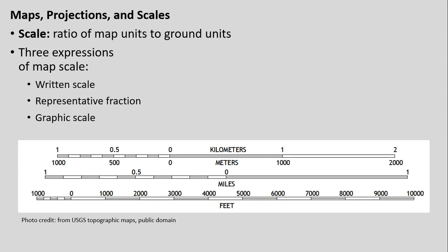Also tied to this, we have map scales. The scale is simply the ratio of map units to ground units — essentially the relationship between the actual distance on the earth's surface and the relative distance on the map.